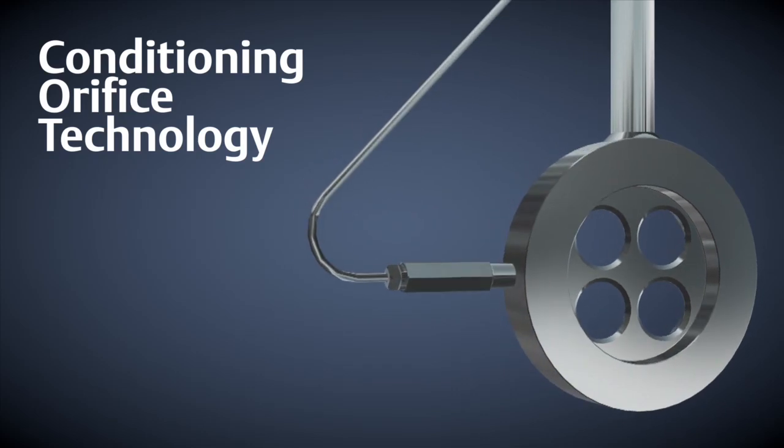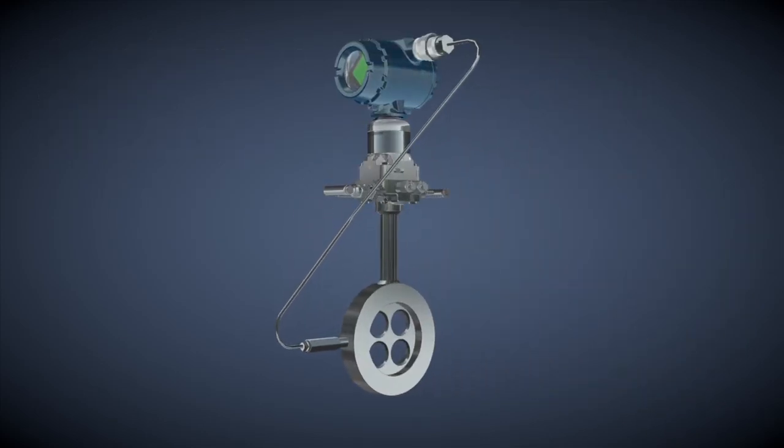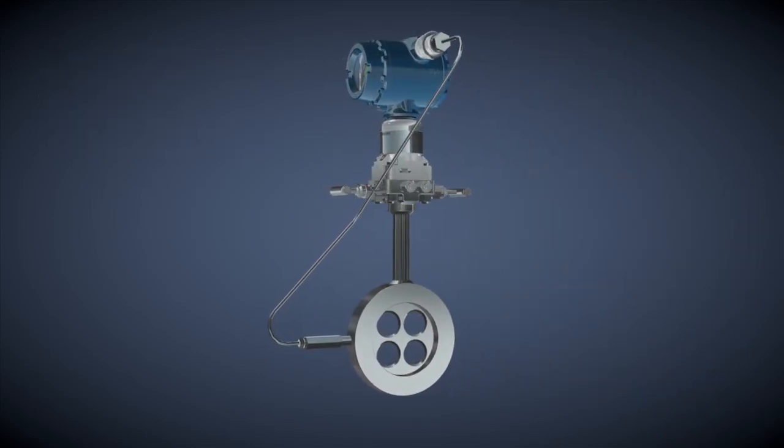Emerson's conditioning orifice plate is a differential pressure flow meter operating on the same principles as other DP producing devices.